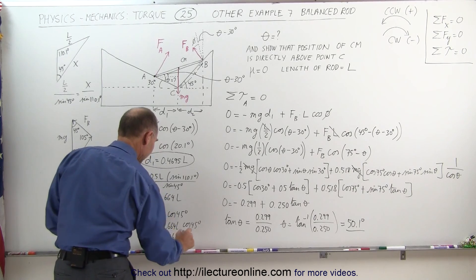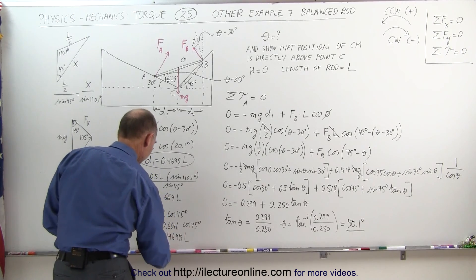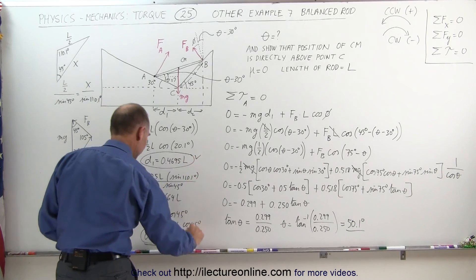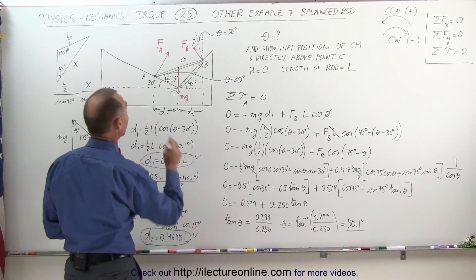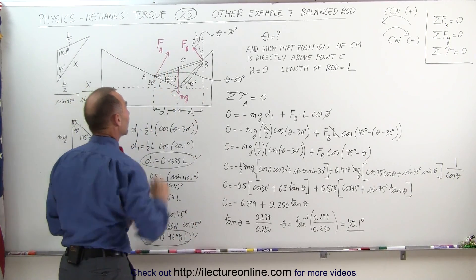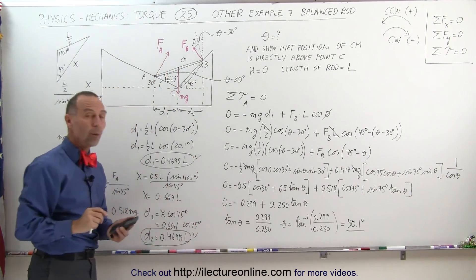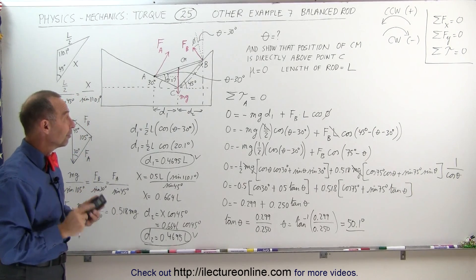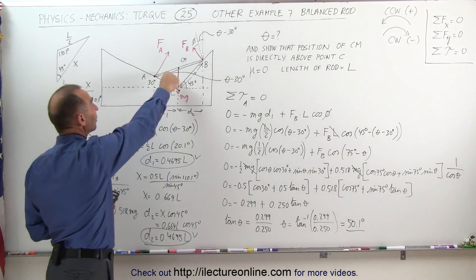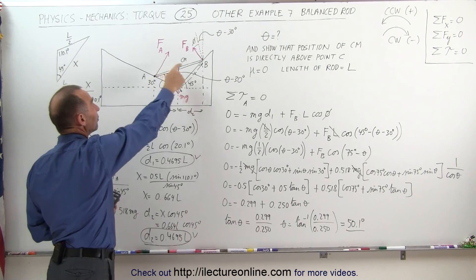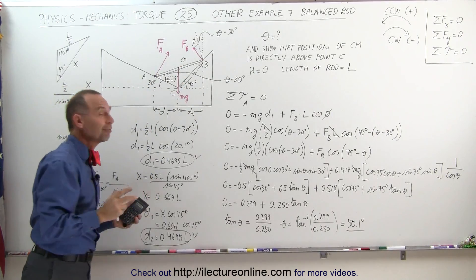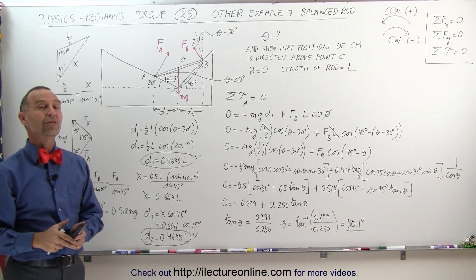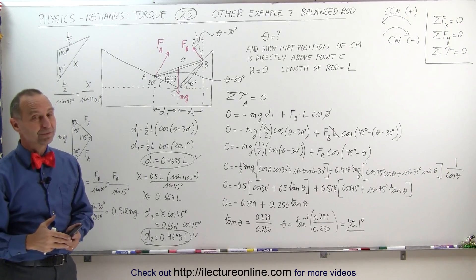Since D2 equals 0.4695L, the exact same value as D1, they are equal to each other. That means the center of mass must be directly over point C. So first we found the angle theta equal to 50.1 degrees, and second we showed that the center of mass is directly above point C. And that's how it's done.